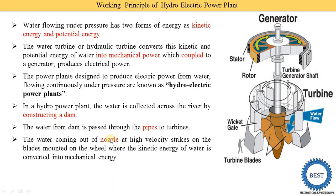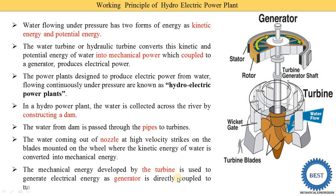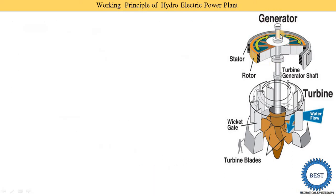Water coming out from this nozzle at high velocity strikes on the blades mounted on the wheel. Here you can see these are the various turbine blades — the high velocity water strikes on them. This kinetic energy of the water is converted into mechanical energy. The mechanical energy developed by the turbine is used to run electrical generators, which are directly coupled with the shaft of the turbine. In the generator, this mechanical energy is converted into electrical energy.